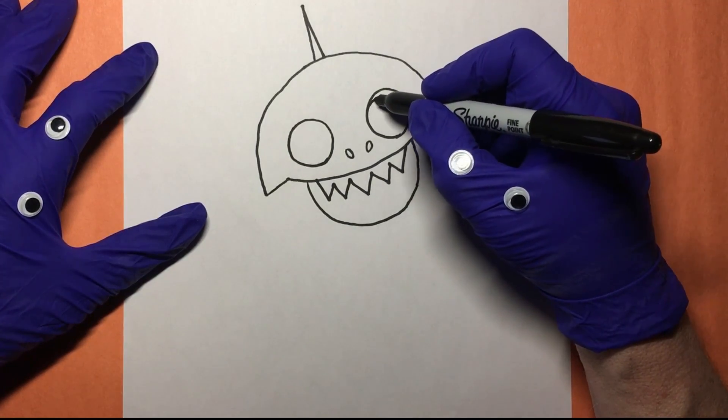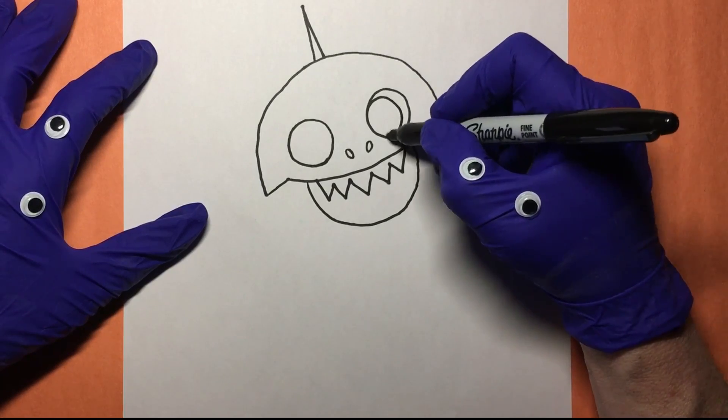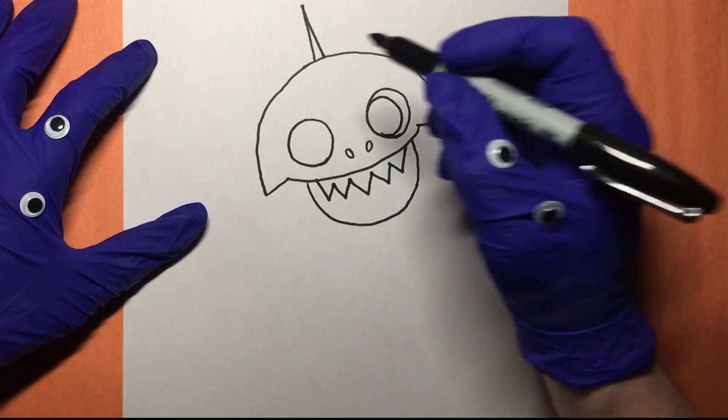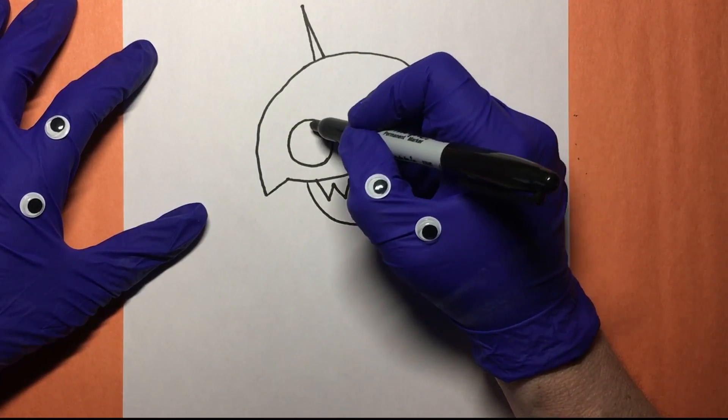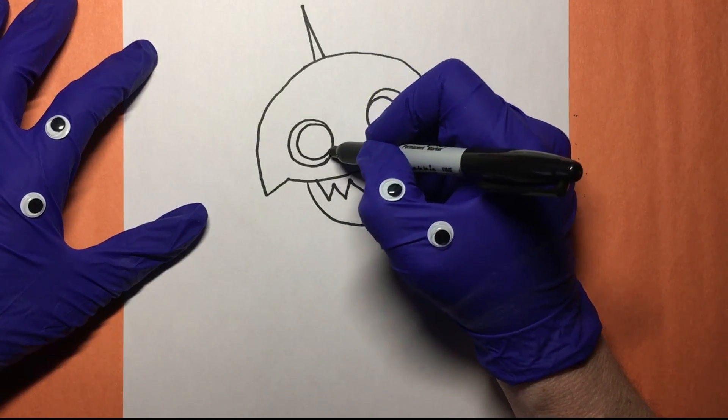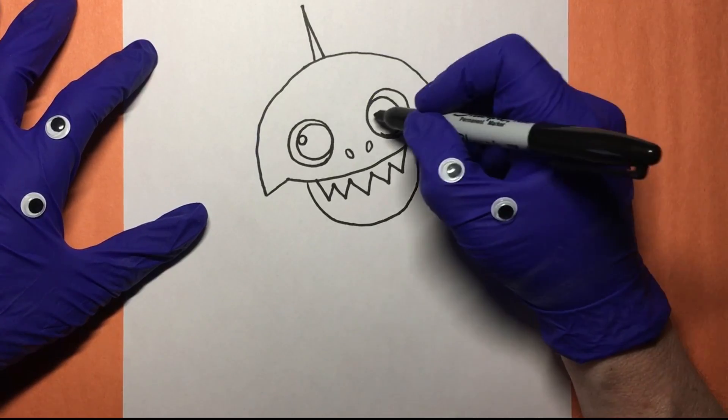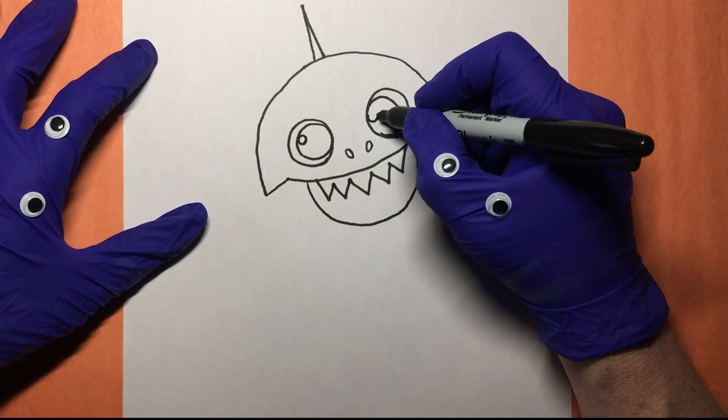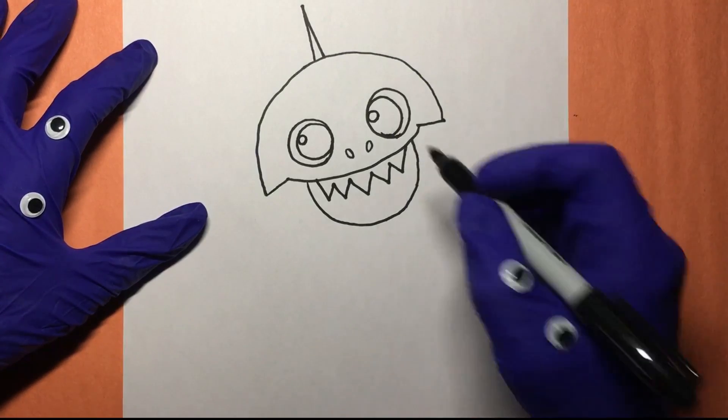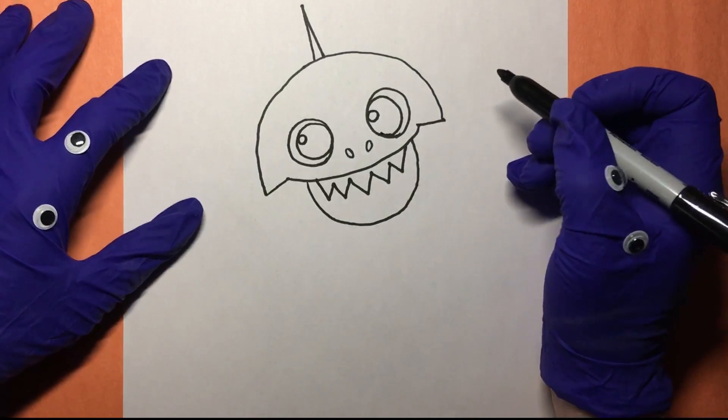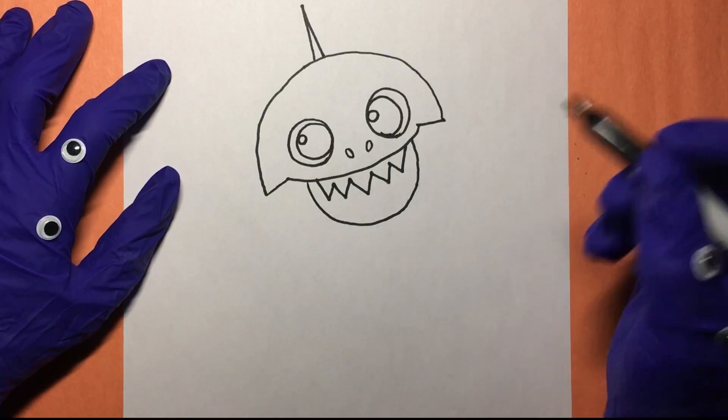And then we can make his big old pupils inside of those eyes just like that. And just like that. That's right. And we'll give him a highlight. One, and two. And we'll color those in later. When we do the color, we'll make them black. That'll be nice.